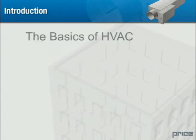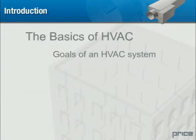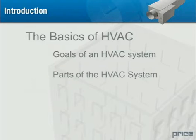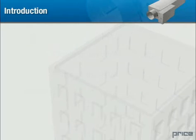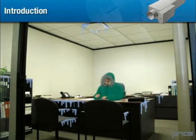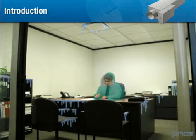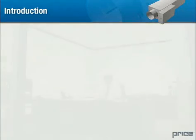In this unit, we will identify the purpose and goals of the HVAC system, describe basic HVAC parts, and describe how these parts work together. Air quality is an essential consideration in maintaining the productivity, comfort, and health of the occupants and should not be trivialized. If air quality and temperature are not maintained, occupant comfort in the workplace can suffer, directly affecting productivity and morale.